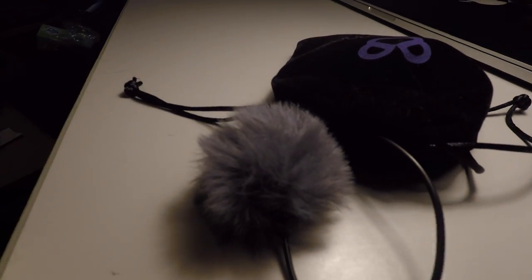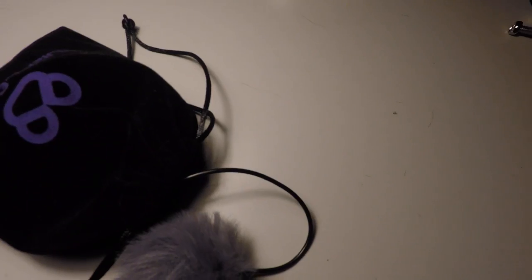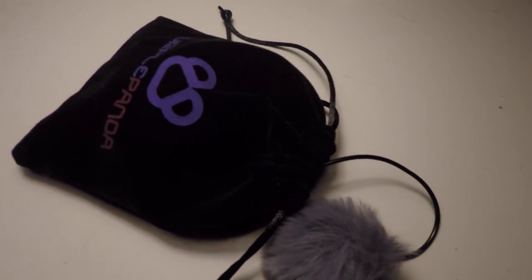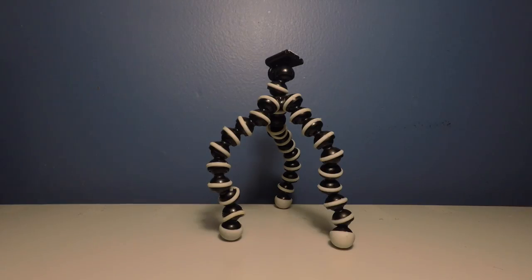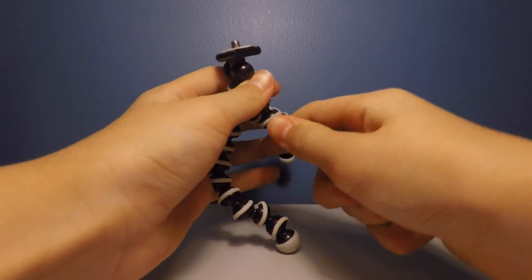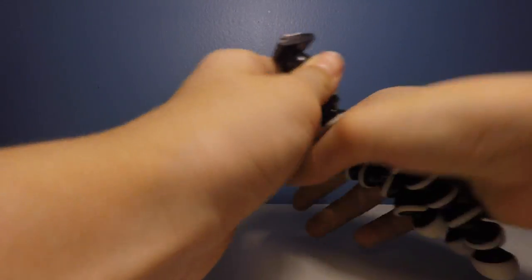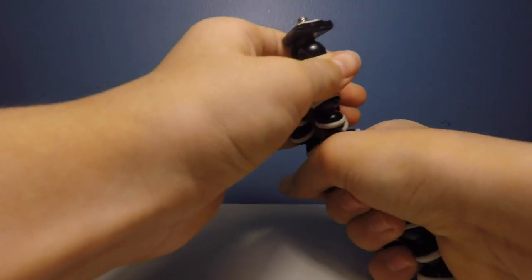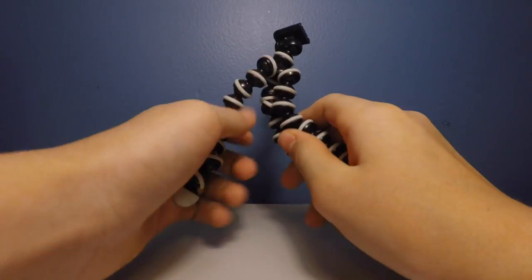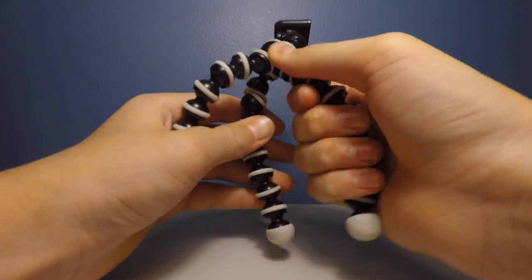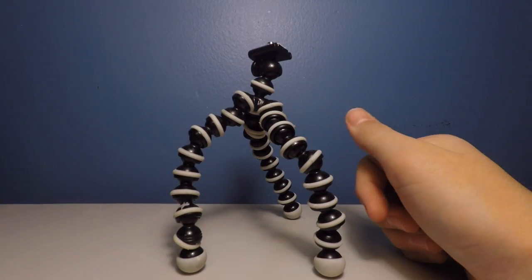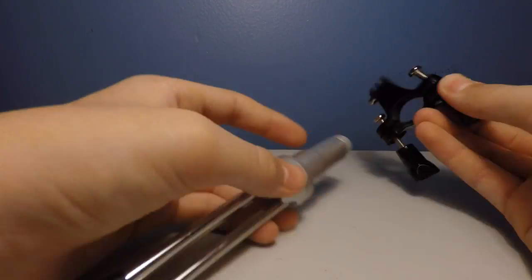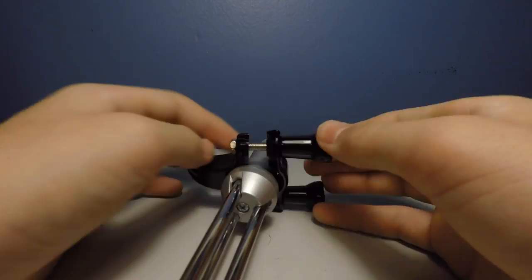Next up we have a bendy tripod by an off-brand Chinese company. It can bend around things as that is its primary use. The pole mount is used to mount action cameras, or in this case a GoPro, to the end of a pole or handlebars on a bike.